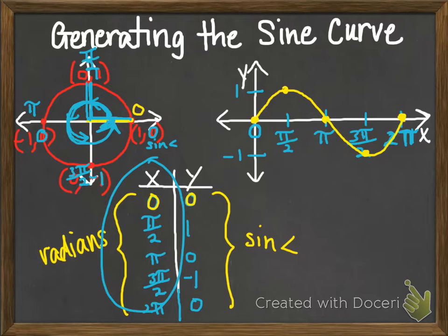That has a maximum at 1, has a minimum at -1, and it has zeros every place else. Now the last thing I want to say is this sine curve is represented by the parent equation y equals sine of x. And it works.